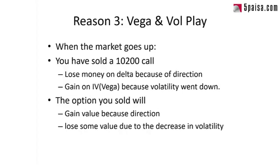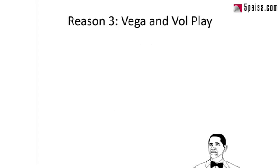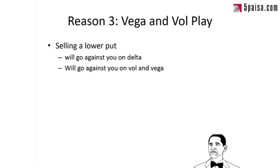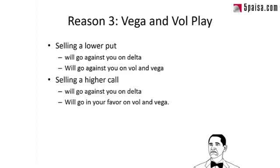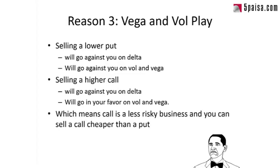Of course, the odds are you'll lose money overall because Delta moves are way higher than Vega gains, but it's not as bad as the put scenario. In summary: selling a low put goes against you on both Delta and Vega; selling a higher call goes against you on Delta but goes in your favor on Vega. This means selling a call is a less risky business, so you can technically sell it for a cheaper price — therefore the IV of a call is lower, hence the skew.